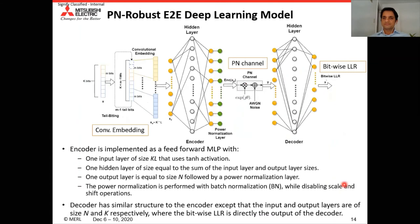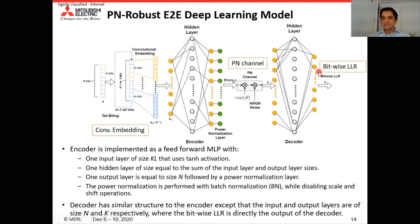This is our complete deep learning model, comprising the tail-biting convolution embedding layer, the encoder, PN channel, and decoder. The encoder and decoder are both feed-forward MLPs with similar structure, but differ in the sizes of their input, hidden, and output layers. At the output of the encoder, we also have a power normalization layer. We used binary cross-entropy to train the network. The DNN output from the decoder can directly be used for soft-decision FEC decoding, without needing an extrinsic LLR converter.